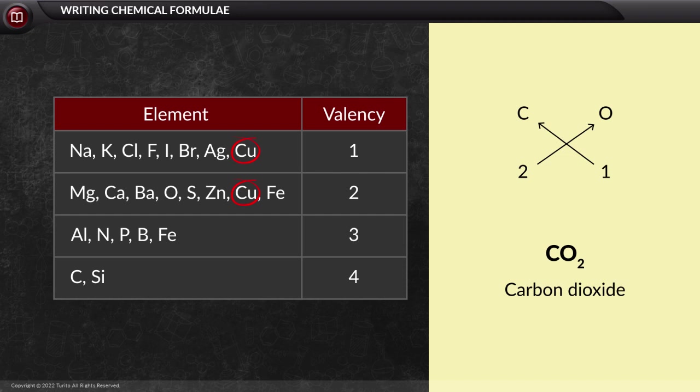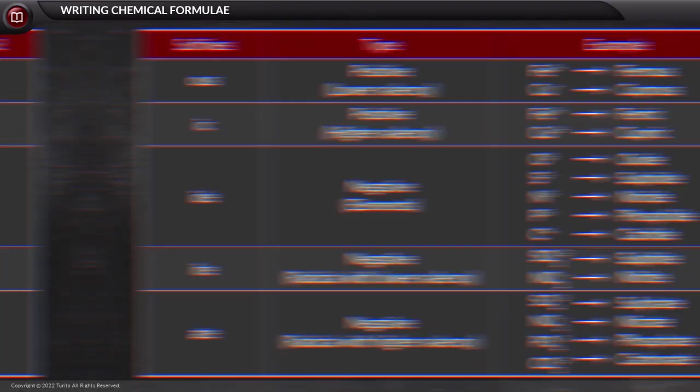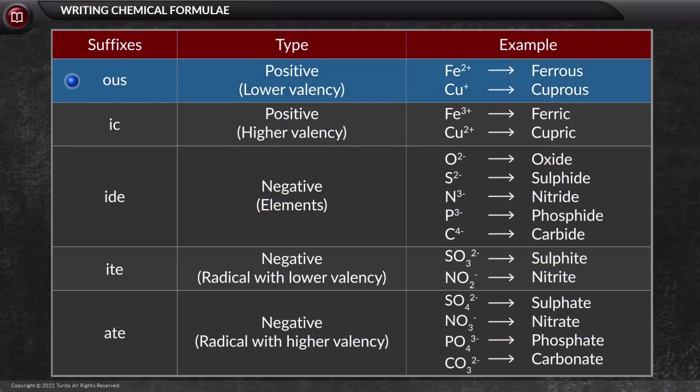So let us see the different suffixes which are given for various lower and higher valencies. The first one is 'ous', that is used for positive lower valency. For example, Fe for valency 2 is ferrous, and Cu with valency 1 is cuprous.